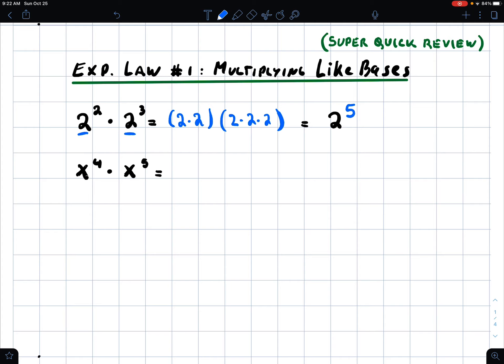And that's where we can see that if I got 2 to the power of 2 times 2 to the power of 3, it's just like 2 to the power of 5. And that is simplifying.